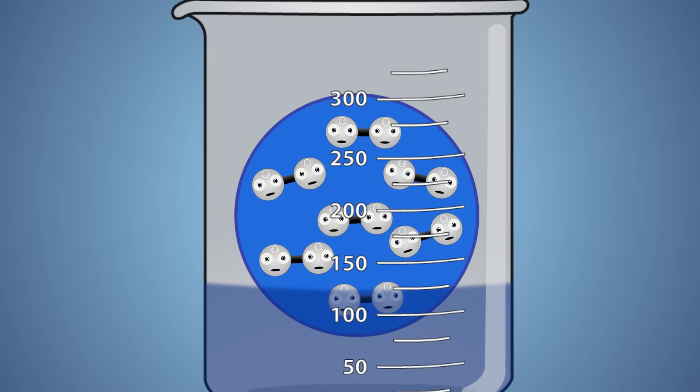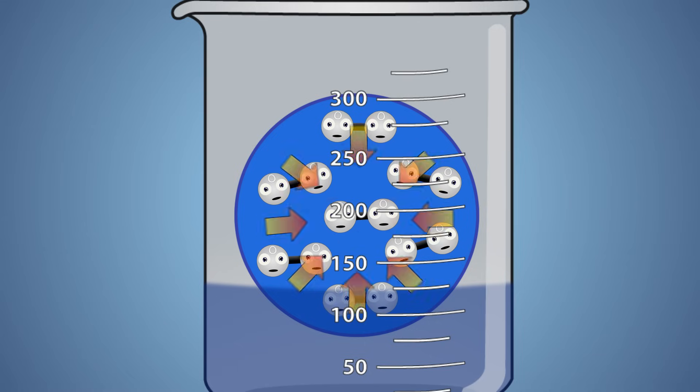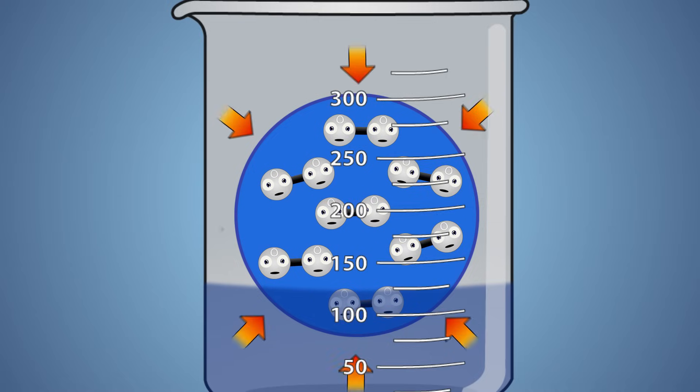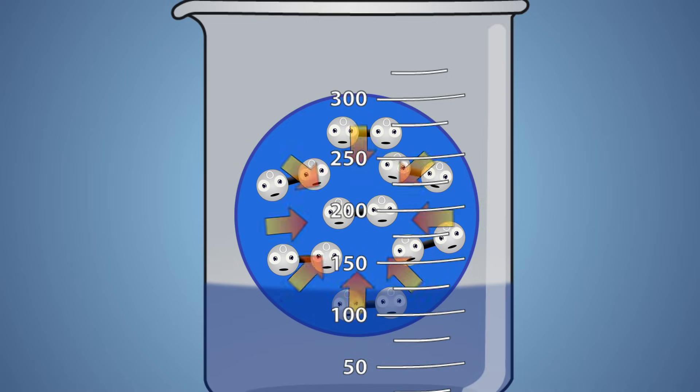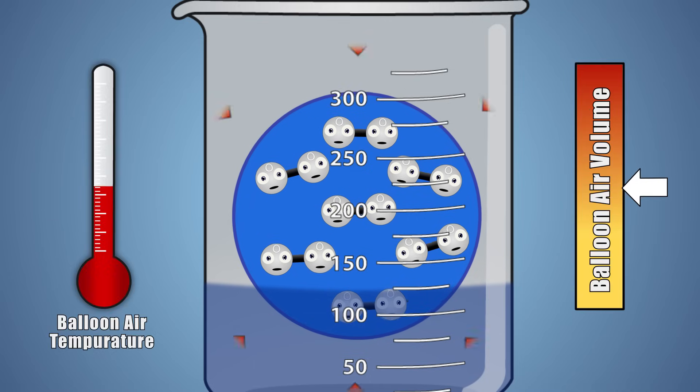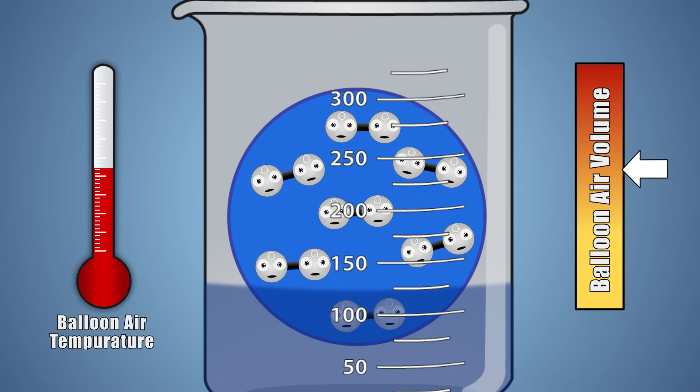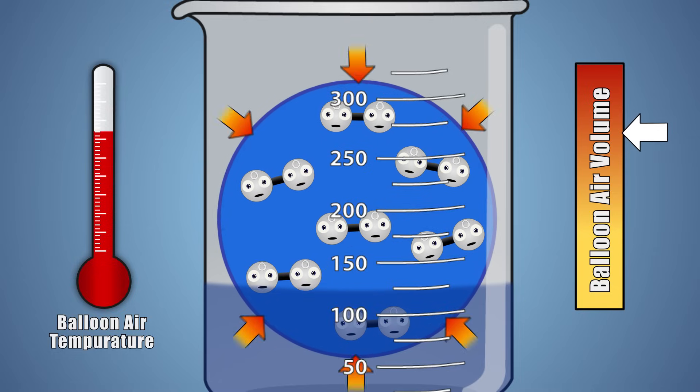In our experiment, our balloon is filled with gaseous air molecules. When the balloon is placed in the beaker with boiling water, the energy from the higher-temperature water and steam molecules transfer to the lower-temperature air molecules inside our balloon, exciting them. When the air molecules in our balloon are excited, by raising their temperature, they spread further and further apart, increasing the volume of space they take up.